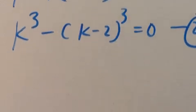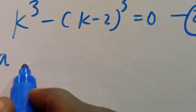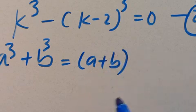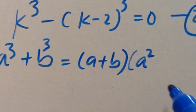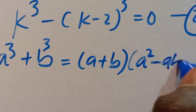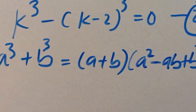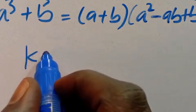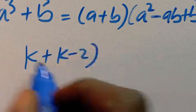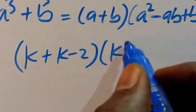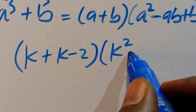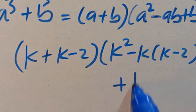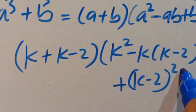Let's solve case one. Recall that a to the power of three plus b to the power of three equals a plus b in parentheses multiplied by a squared minus ab plus b squared. When we apply it here, we are going to have k plus k minus 2, multiplied by k squared, then minus k multiplied by k minus 2, plus k minus 2 in parentheses to the power of 2, equals zero.